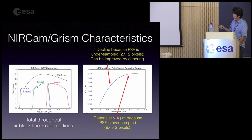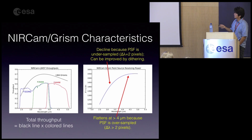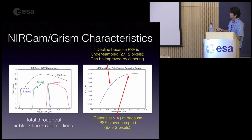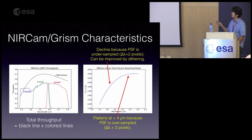The resolving power drops toward shorter wavelengths because in the long-wavelength channel, the PSF is critically sampled around 4 microns. At shorter wavelengths the PSF gets smaller, but the PSF sampling is limited by pixel scale, so it becomes under-sampled. Delta lambda is always two pixels, which is why resolving power decreases as a function of lambda while delta lambda stays constant. At longer wavelengths the PSF is oversampled, and since PSF size increases linearly with lambda, resolving power stays roughly constant — approximately 1200 to 1550.